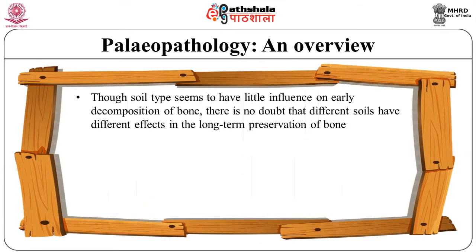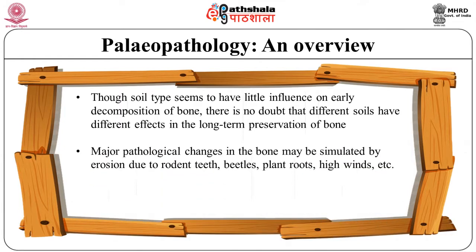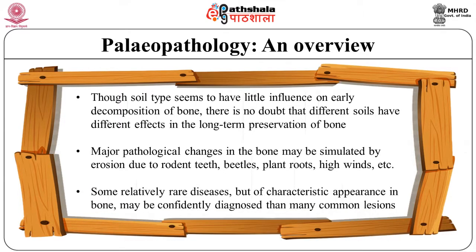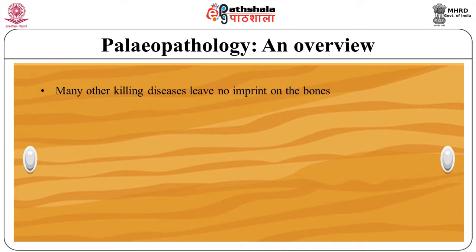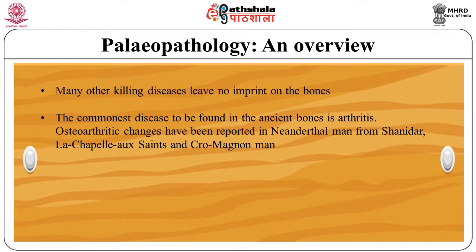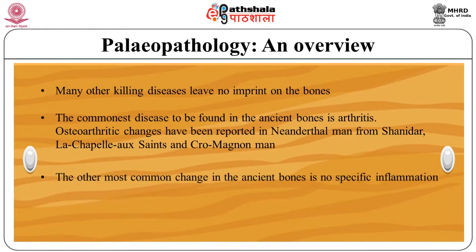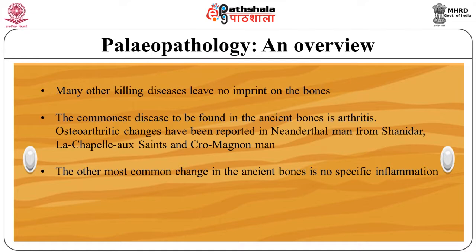Now let's have a look at the overview of paleopathology. Though soil type seems to have little influence on early decomposition of bone, different soils have different effects on the long-term preservation of bones. Major pathological changes in bone may be simulated by erosion due to rodent teeth, beetles, plant roots, high winds, etc. Some relatively rare diseases with characteristic appearance in bone may be confidently diagnosed, whereas many common lesions may not. Many killing diseases leave no imprint on bones. The commonest disease found in ancient bone is arthritis. Osteoarthritic changes have been reported in Neanderthal men from Shanidar, La Chapelle-aux-Saints and Cro-Magnon men. The other most common change in ancient bone is non-specific inflammation.